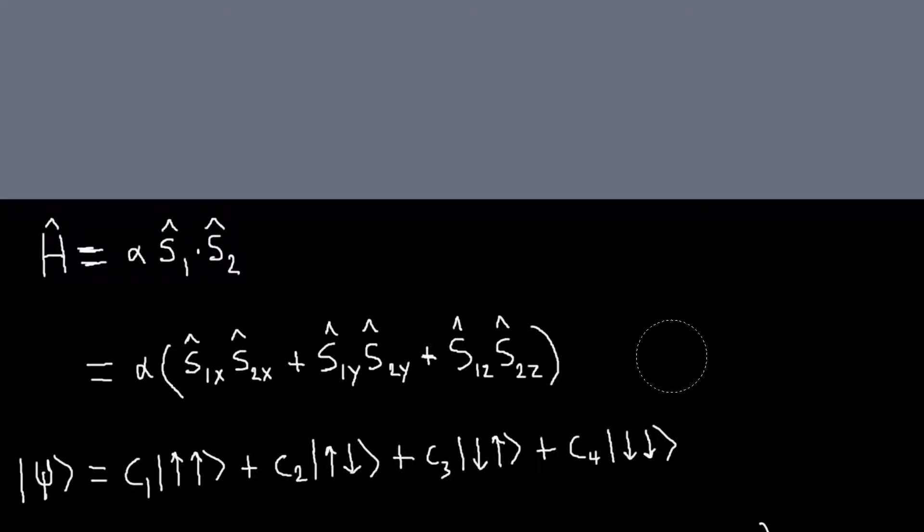Before, it was easy to identify that these states were eigenstates of our Hamiltonian. But for this problem, it's not so obvious because the Hamiltonian involves these x and y operators, and we've written our state as the Kronecker product of the individual spin-z states.